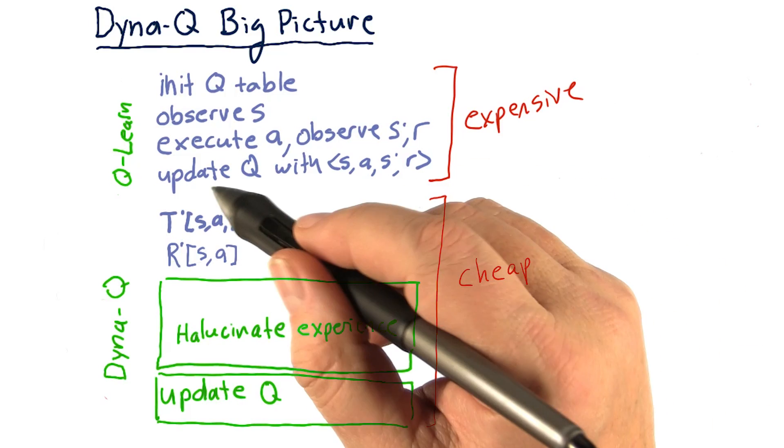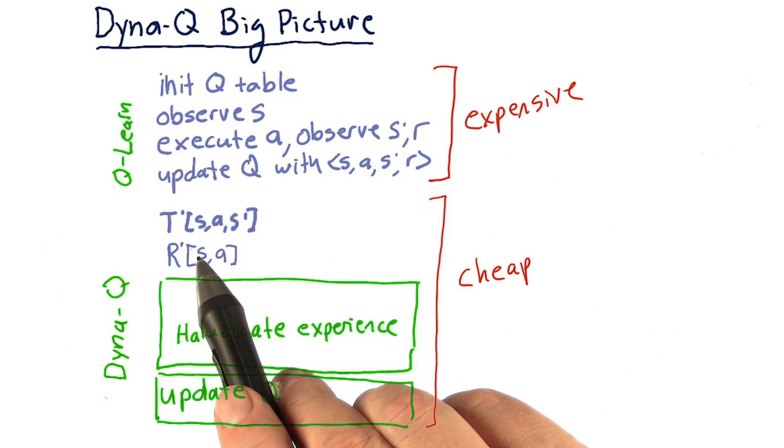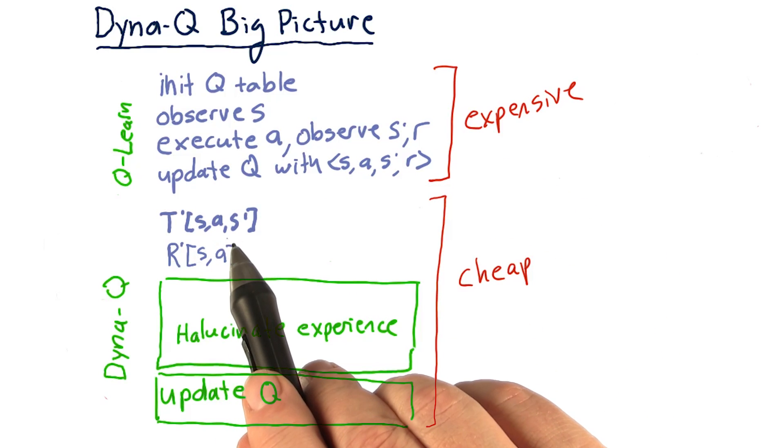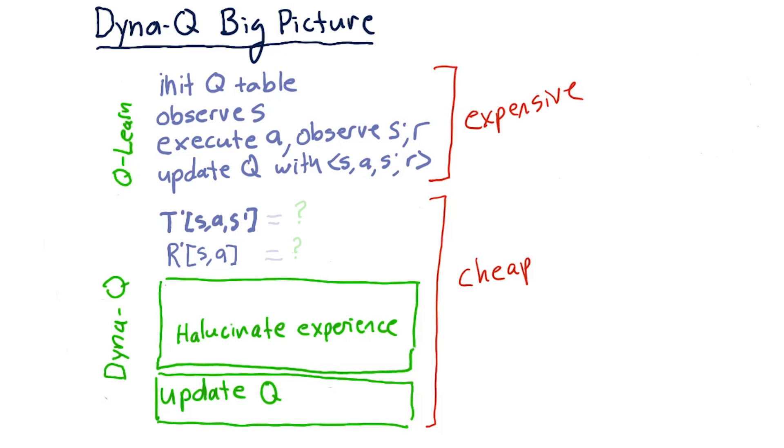Now, remember that T is the probability that if we're in state S, and we take action A, we'll end up in S prime. And R is our expected reward if we're in state S and we take action A. I'm going to show you in a moment how we'll update T and R.